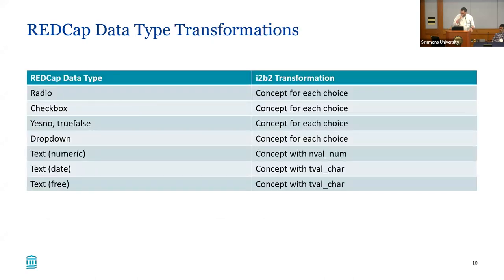This briefly shows the choices we make about REDCap data types into i2b2 transformations. When you have a radio box, it becomes a concept in the observation fact table. When there's a numeric text, that goes into nval_num. When there are dates, we put them in tval_char, and that enables certain types of queries.